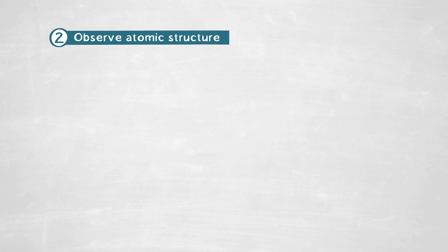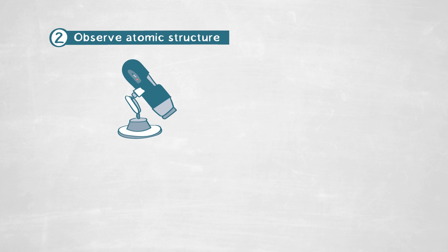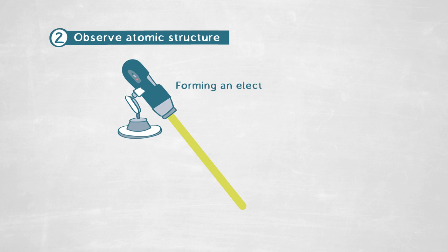The method we use to observe the atomic structure is the transmission electron microscope — more particularly, scanning transmission electron microscopy. We form a very small electron probe, only about a tenth of a nanometer — the size of a few atoms.